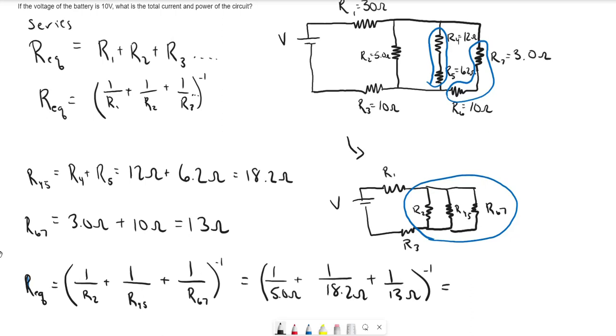Don't forget to take the inverse after you've completed what's in the parentheses. Make sure to not take the inverse of each of these individually because then you're just adding them together like resistors in series. And so for the equivalent resistance of these resistors in parallel, we end up with 3.0 ohms.